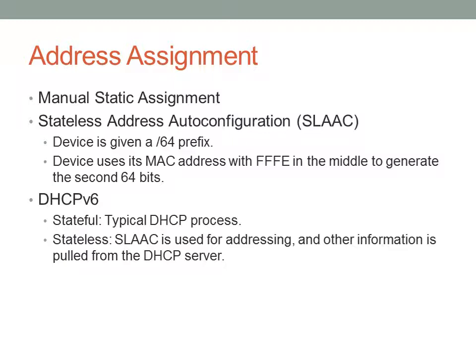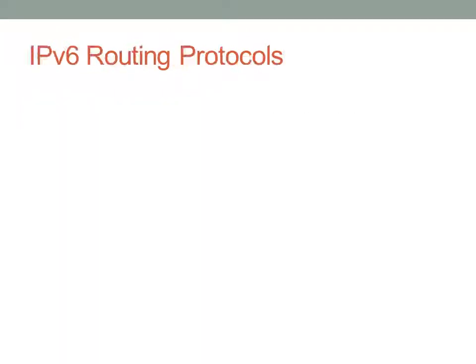There's also DHCPv6 for IPv6, which works with a typical DHCP process. There is also what's called stateless DHCP, where SLAAC is used for addressing and other information like DNS server addresses is pulled from the DHCP server. The stateless option is handy for situations where hosts can assign themselves an address but don't know where to go for domain name resolution — DHCP servers can still advertise that information.